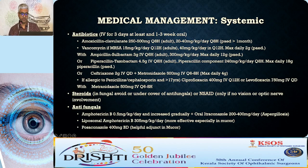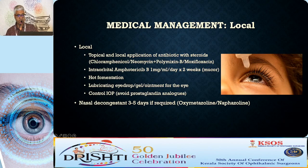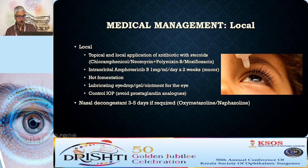Antifungals have a role in aspergillosis or mucormycosis. For aspergillosis, amphotericin B and itraconazole are used. For mucor, liposomal amphotericin B is more effective when adjuncted with posaconazole. Topical antibiotics with steroid ointments are given for lid swelling. Intraorbital amphotericin B can be given in mucor cases. Lubricating eye drops prevent corneal exposure and dryness. IOP should be controlled — avoid prostaglandin analogs. Nasal decongestants for three to five days if required.